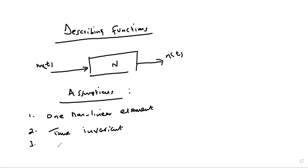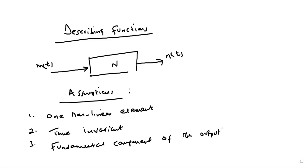Assumption three: corresponding to the sinusoidal input m(t), we only consider the fundamental component of the output n(t). That means we expand the output in a Fourier series and take only the fundamental component. Assumption four: we assume that the non-linearity has odd symmetry — that is, symmetry about the origin.